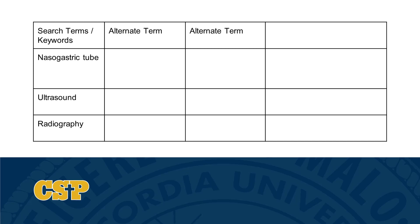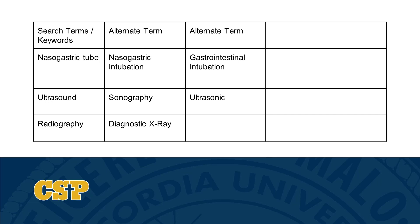Now that we've identified our search terms from our PICO question, we're going to think of some alternate terms. This is because there are usually multiple ways to describe a medical procedure or medical device, such as a Nasogastric tube, and we want to make sure our search encompasses all of those different elements. To find alternate terms, we're going to think about synonyms for our search terms. You can also do a quick search in Google or another search engine and see what articles pull up. For Nasogastric tube, I found 'Nasogastric intubation' and 'Gastrointestinal intubation.' Note that Gastrointestinal intubation includes the entire gastrointestinal tract, so you want to make sure you're using a broad enough term.